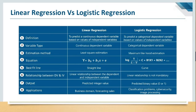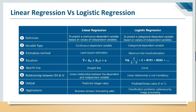The best fit line in linear regression is a straight line, while in logistic regression it is an S-shaped curve. For the relationship between dependent and independent variables: linear regression requires a linear relationship, whereas in logistic regression a linear relationship is not mandatory because the dependent variable is categorical. The output of linear regression is a predicted integer value; in logistic regression it is a binary value. Applications of linear regression are in business and sales forecasting. Applications of logistic regression include classification problems, cyber security, and image processing.